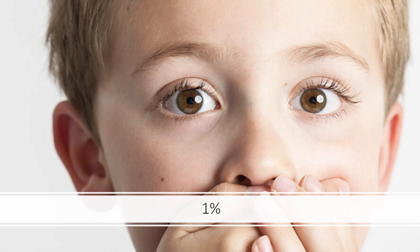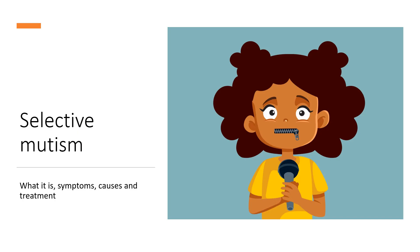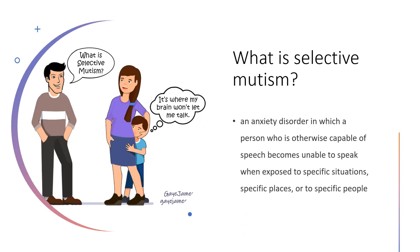Selective mutism (SM) is fairly rare — it affects less than one percent of people across all age groups. It almost always begins in childhood around age five, often coming to attention soon after a child starts preschool, kindergarten, or grade school. It's less common but still possible in teenagers and adults. Selective mutism is an anxiety disorder in which a person who is otherwise capable of speech becomes unable to speak when exposed to specific situations, places, or people that serve as triggers.